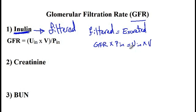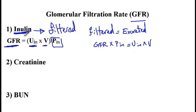If you rearrange this equation, it gives you GFR equals urinary concentration of inulin times the volume of urine divided by the plasma concentration of inulin. While this technique is very accurate for measuring GFR, it's inconvenient in that you have to provide IV infusion of inulin, and not every lab or hospital may be equipped with this technique.